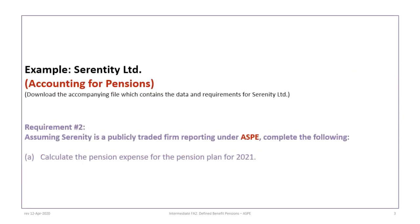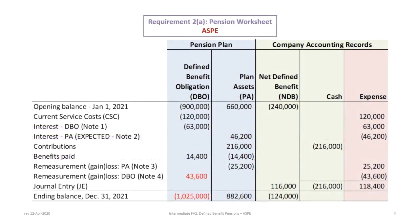This tutorial is still based on the Serenity Limited set of data. The information is exactly the same as in tutorial 10a, except now we will be performing the requirements under ASPE. The first requirement is to calculate the pension expense. Even though the requirement is asking only to determine the pension expense, what I've done here is presented the entire pension worksheet to act as a bit of review from tutorial 10a.